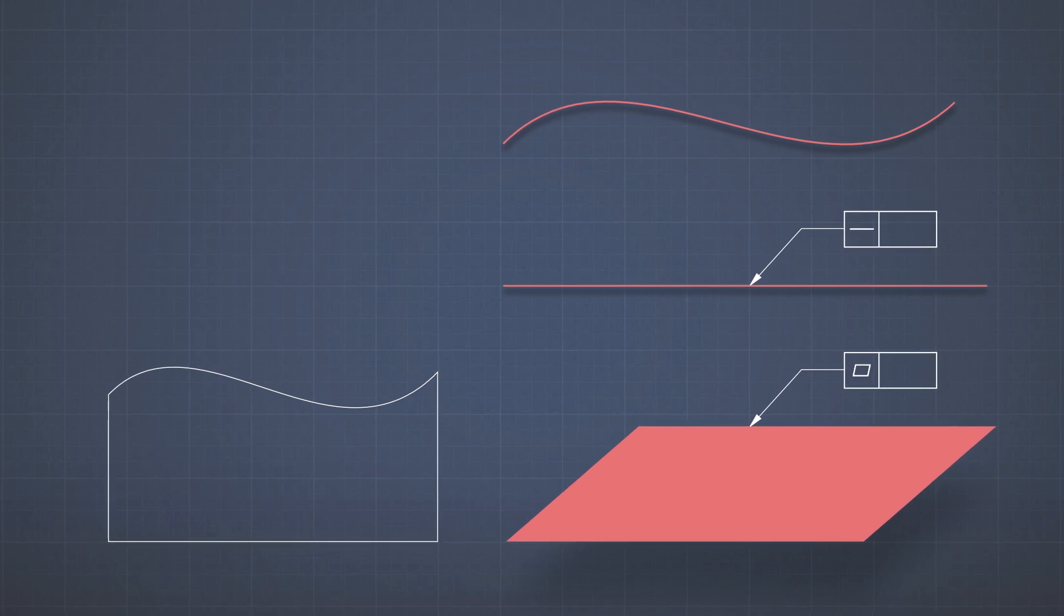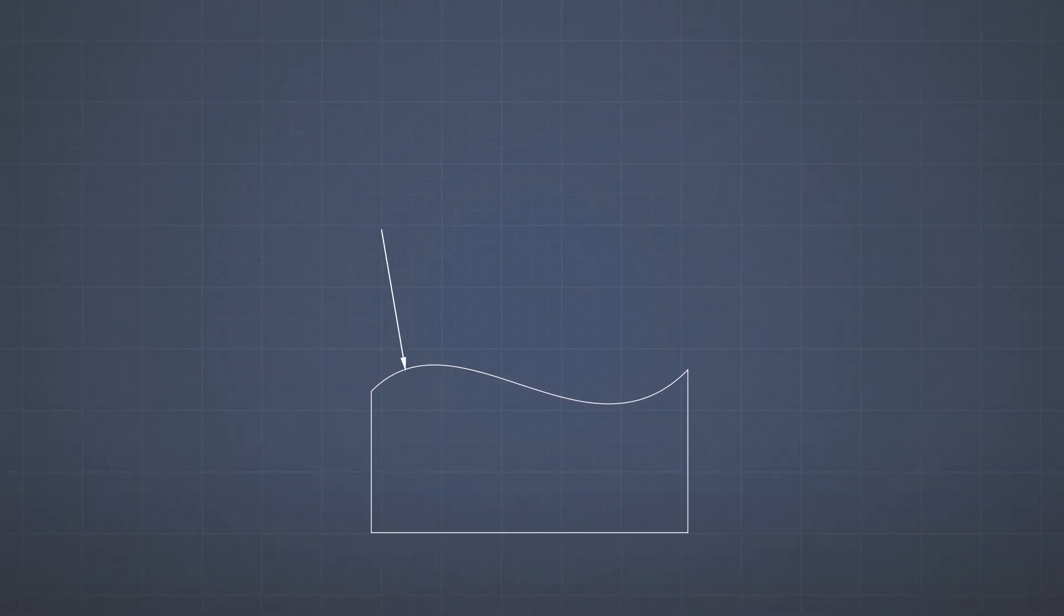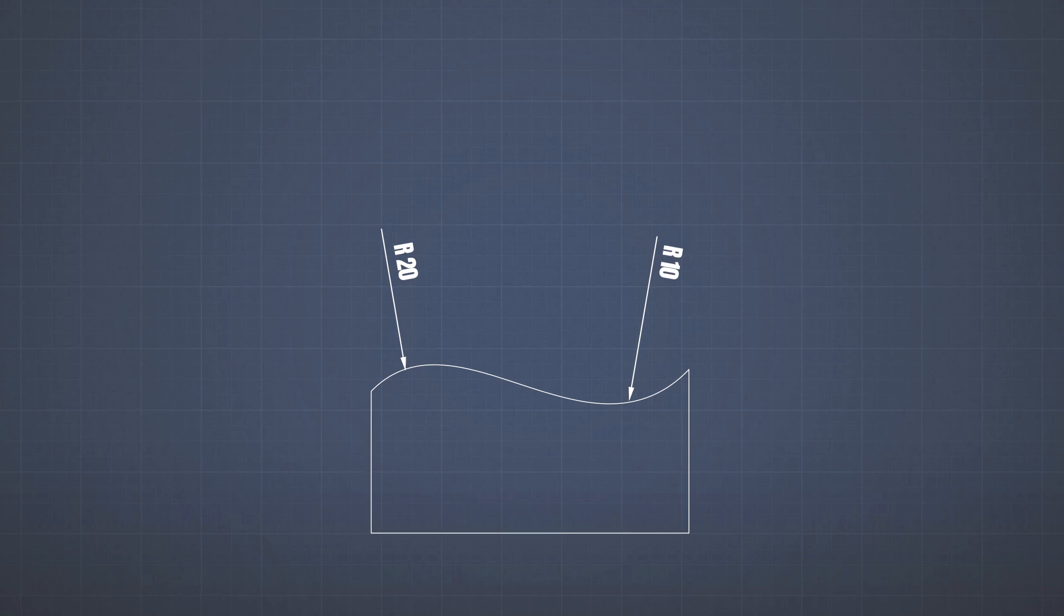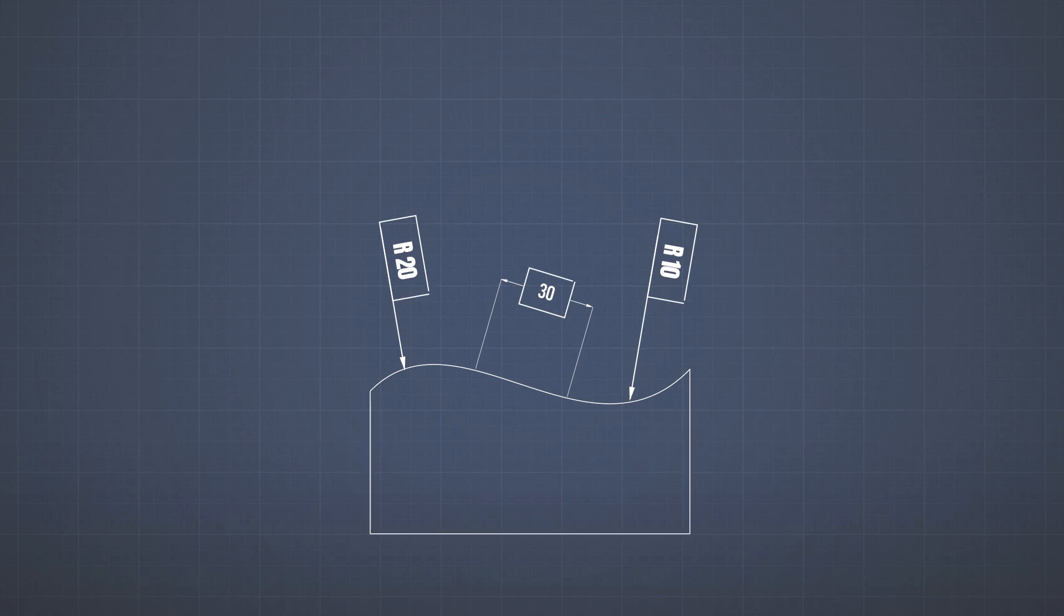Which means you have to give it dimensions. But these dimensions are called basic dimensions. So you're saying this part of the surface has a diameter or radius. Let's use radius sign of 20, for example. And here, let's use another radius of 10. And here there is a length of 30 and so on. But you have to put these dimensions in a box like this one.